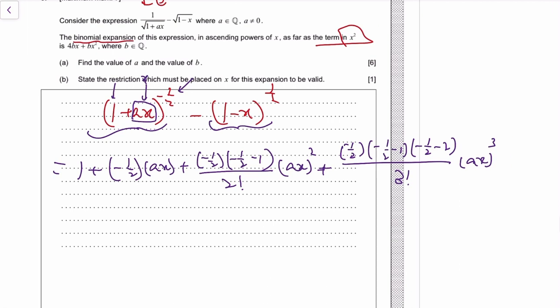So you probably get the pattern now, but for this time we only need the x squared term, so we will stop at x squared. And then you minus the binomial expansion of the second thing.